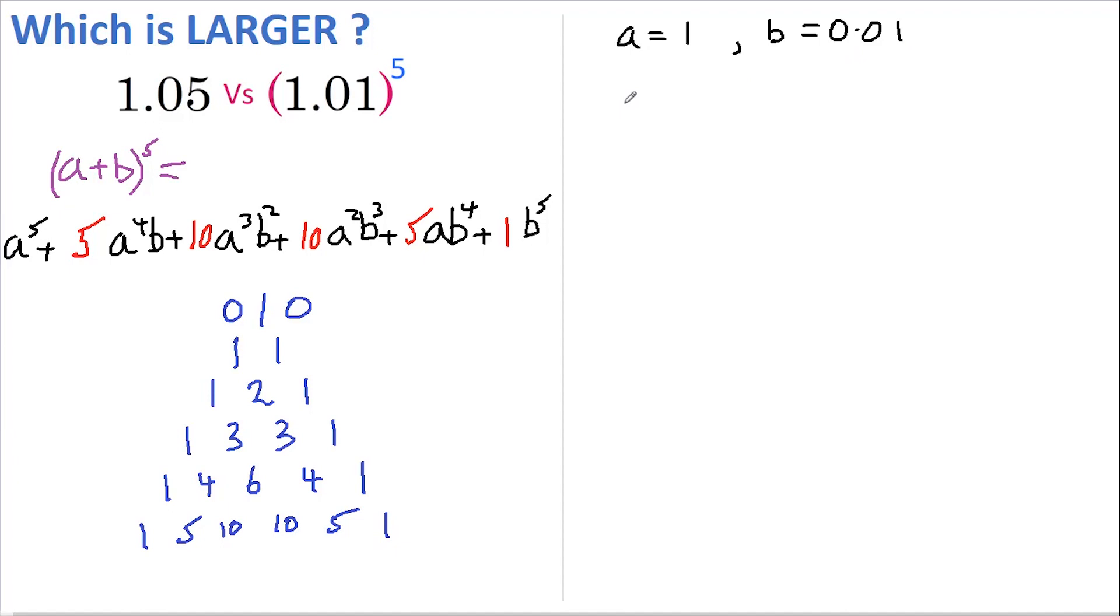So our first term, which is a to the 5, is just 1 to the power of 5. The next term is 5 times 1 to the power of 4 multiplied by 0.01 to the power of 1. Now if we keep track of these as we go along, this equals 1 and this equals 0.05.